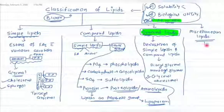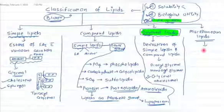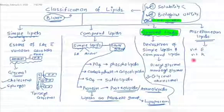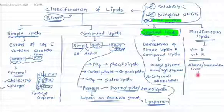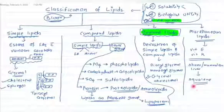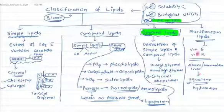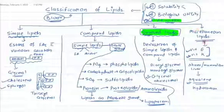Miscellaneous lipids are lipids which cannot be placed under simple lipid, compound lipid, or derived lipid. For human biochemistry, only two compounds are important under miscellaneous: vitamin E and vitamin K. In non-human biochemistry, such as in shark or mammalian liver, there is a compound known as squalene, which is a hydrocarbon that can be placed under miscellaneous lipids.